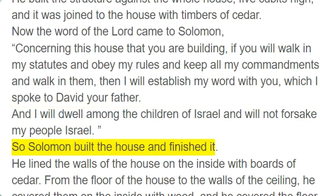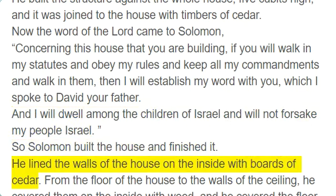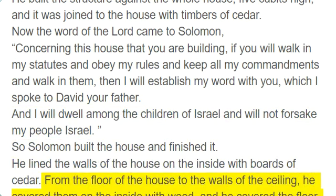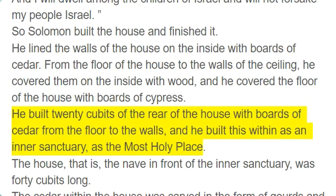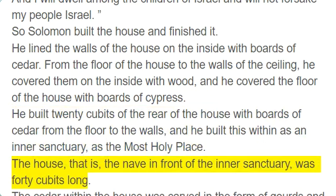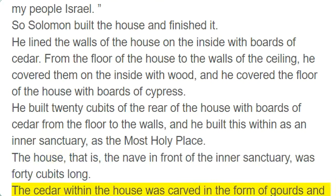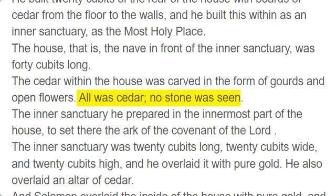So Solomon built the house and finished it. He lined the walls of the house on the inside with boards of cedar. From the floor of the house to the walls of the ceiling, he covered them on the inside with wood, and he covered the floor of the house with boards of cypress. He built 20 cubits of the rear of the house with boards of cedar from the floor to the walls, and he built this within as an inner sanctuary, as the most holy place. The nave in front of the inner sanctuary was 40 cubits long. The cedar within the house was carved in the form of gourds and open flowers. All was cedar; no stone was seen.